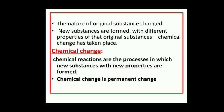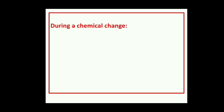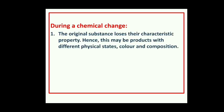A chemical change is a permanent change. What happens during a chemical change? The original substance loses its characteristic property. Hence, products may be formed with different physical states, color, and composition. There is a chance of change in the physical states and color of the products, and the composition of the products also changes.